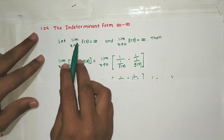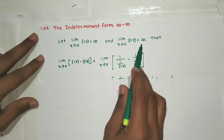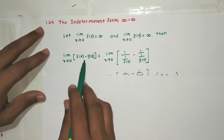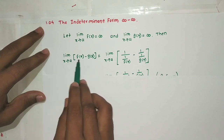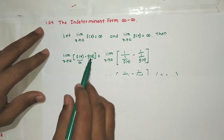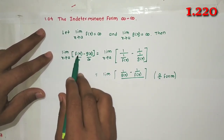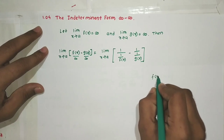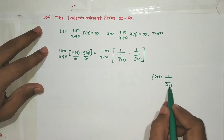Suppose we have limit x tending to a of f(x) equals infinity, and limit x tending to a of g(x) equals infinity. Then limit x tending to a of [f(x) - g(x)] is of the form infinity minus infinity. We can write f(x) as 1 divided by (1/f(x)).